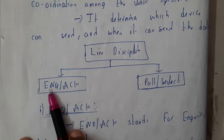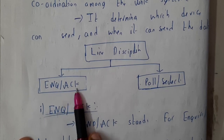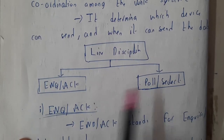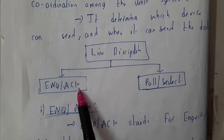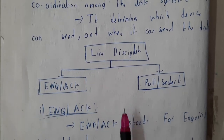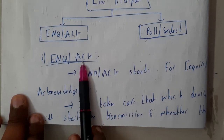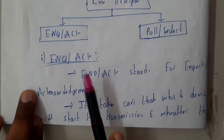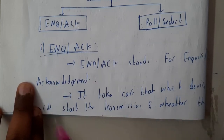Line discipline can be achieved by using two methods: ENQ/ACK, which stands for Enquire and Acknowledge, or Poll/Select. In this lecture we'll be going through ENQ/ACK, and in the next lecture we'll be going through Poll/Select.